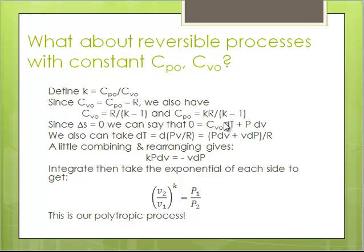We said that you could use these definitions of constant C_P and C_V in terms of k, the ratio of C_P to C_V, and R, the gas constant, which is the difference between C_P and C_V. If we substitute in, integrate, and rearrange, we came up with this, which was our polytropic process.